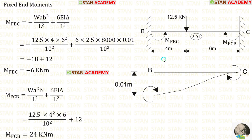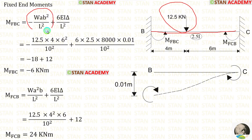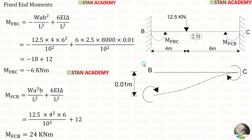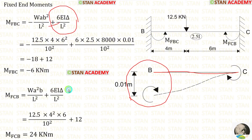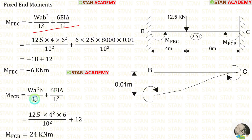Now let us find the fixed end moments in span BC. There is an eccentric point load of 12.5 kN. The formulas for fixed end moments are −WAB²/L² and +WA²B/L². Since support B is sinking, we also need the fixed end moment due to sinking. In span BC, sinking occurs on the left side, so the fixed end moments due to sinking will be positive.